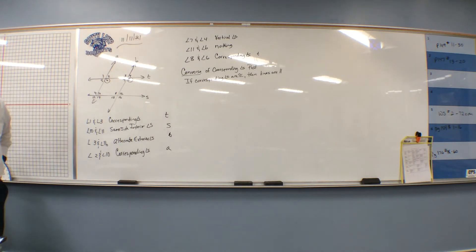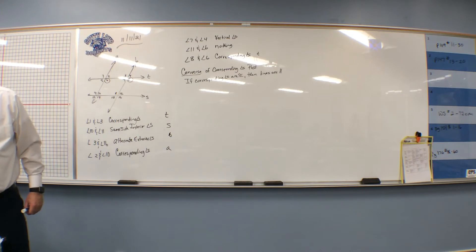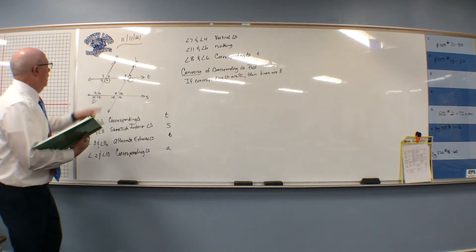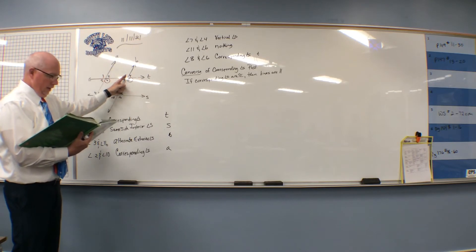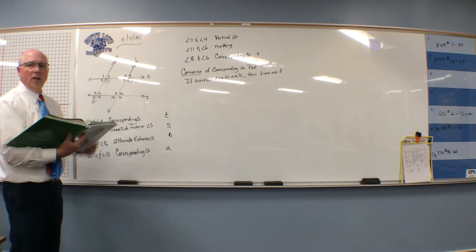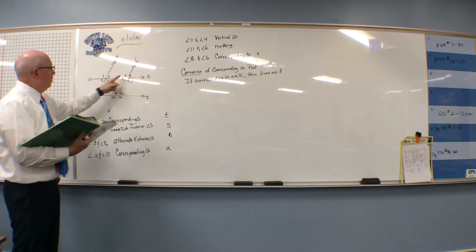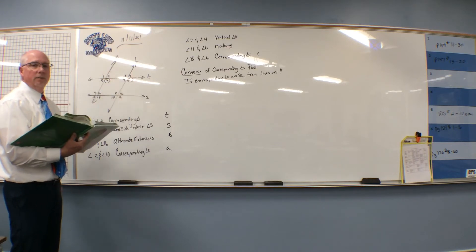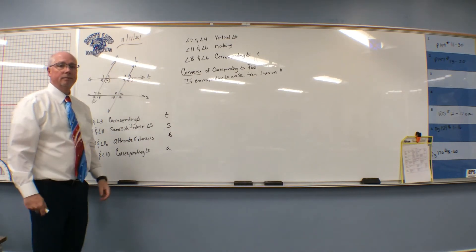I condensed this, so here's the whole thing: if two lines are cut by a transversal such that corresponding angles are congruent, then these two lines are parallel. I condensed it to: if corresponding angles are congruent, then these two lines are parallel. I've left out some important words, but I want to make these shorter and easier to learn.